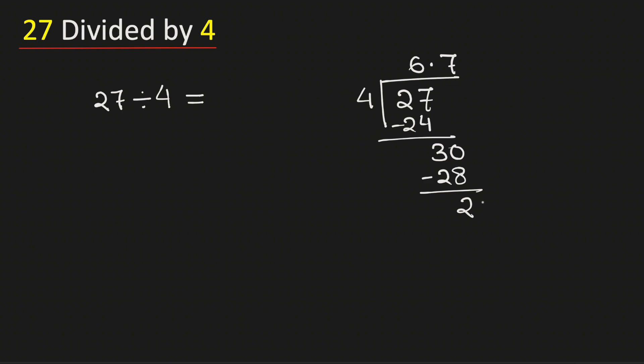Again 2 is less than 4, so we will put a 0 and we know that 4 times 5 is 20. Subtract, we get 0.